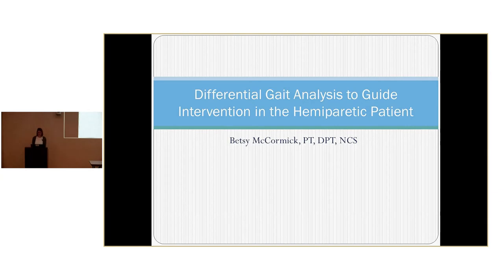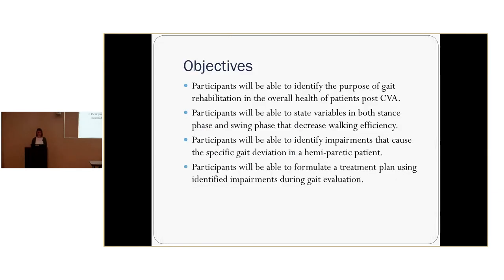Thanks, Steve. Quickly going through objectives, the things I want to focus on today: after this presentation, we'll be able to identify the purpose of gait rehab and the overall health for a patient post-CVA, state variables in both stance phase and swing phase that decrease walking efficiency, identify impairments that cause a specific gait deviation in a hemiparetic patient, and formulate a treatment plan using identified impairments during gait evaluation.